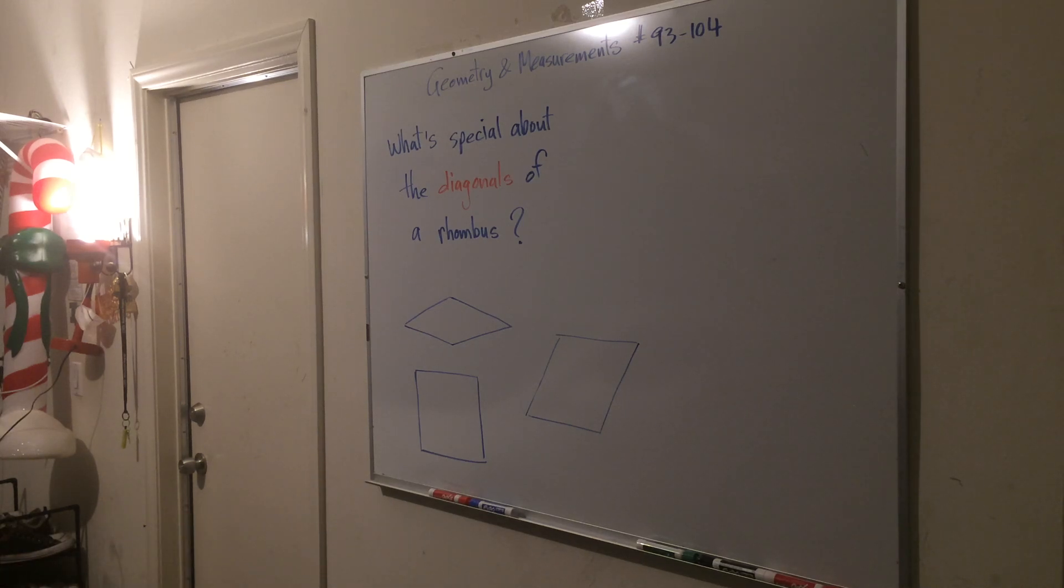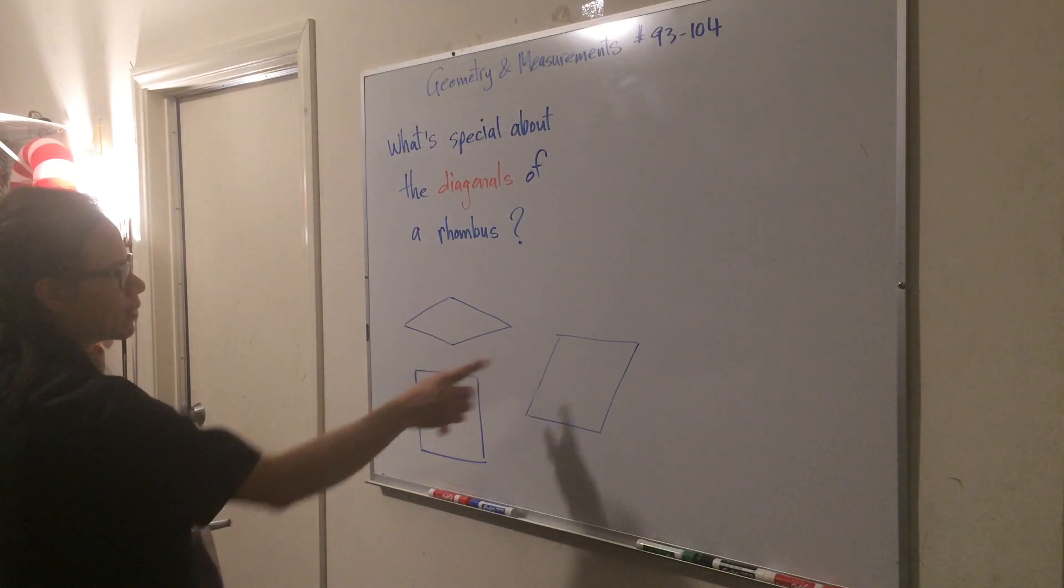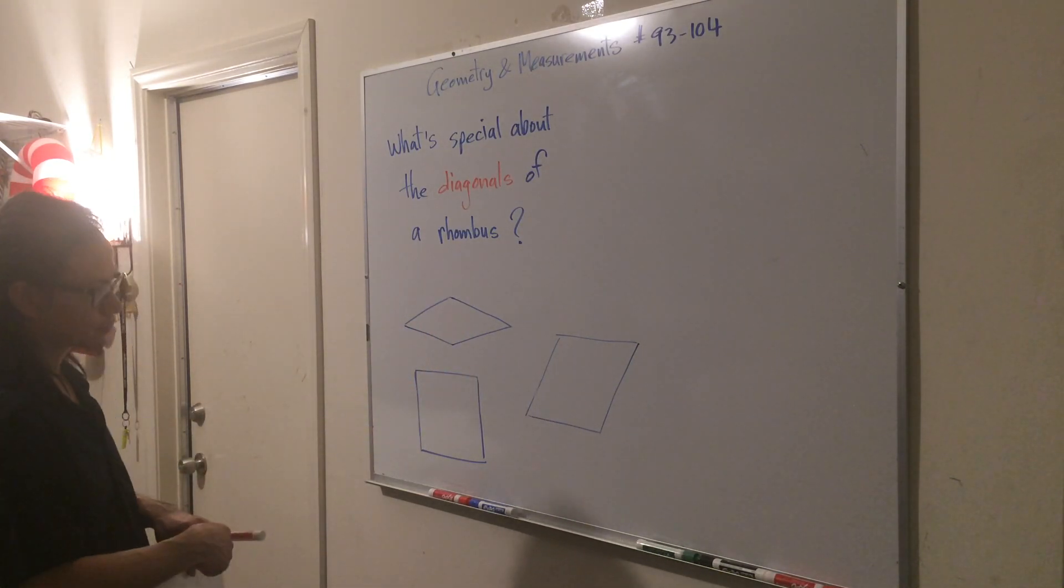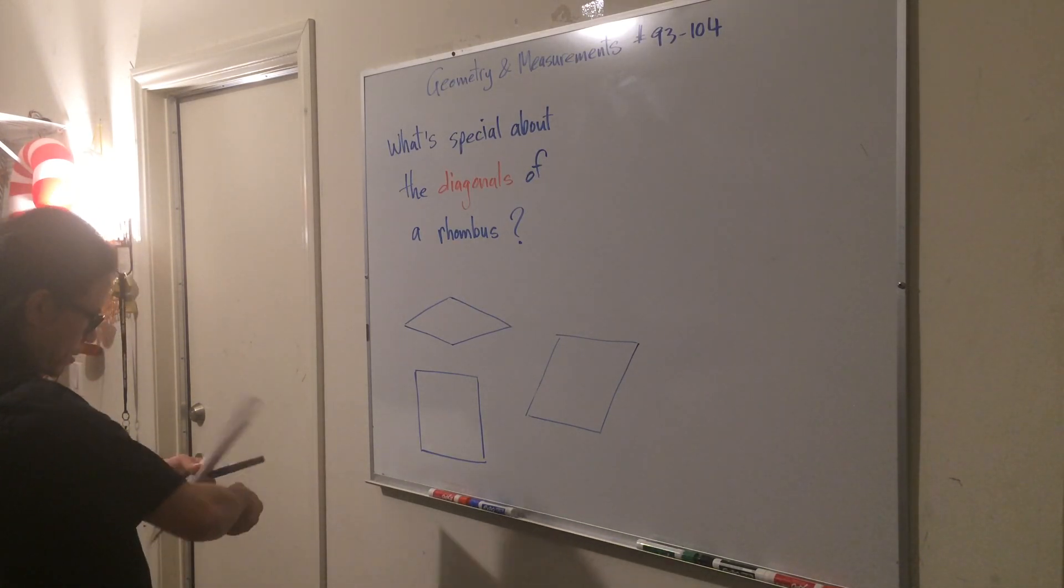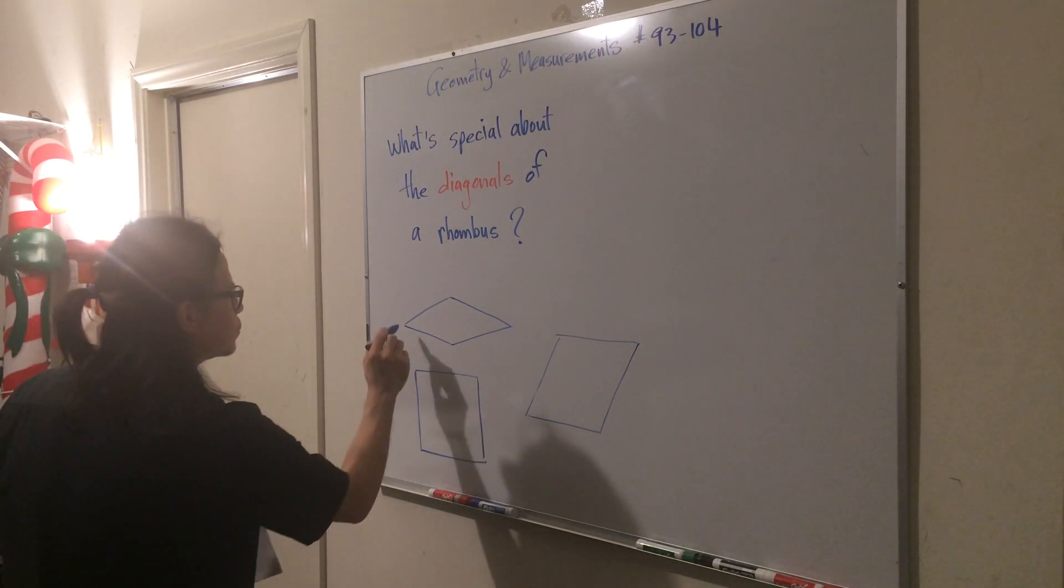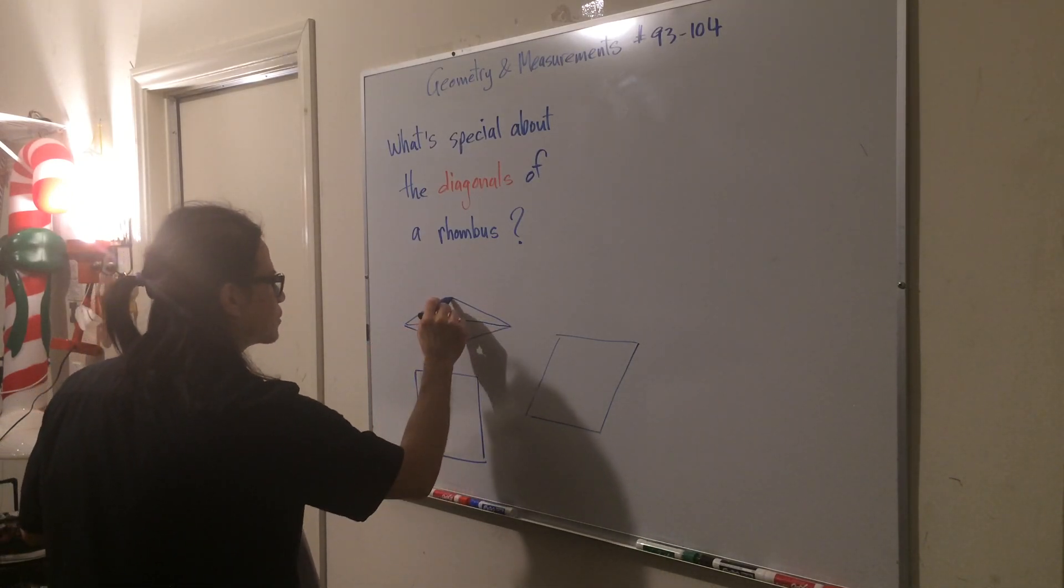So the question is: what's special about the diagonals of a rhombus? We have a variety of rhombuses here. By saying diagonals, we mean if you were to connect the opposite angles, like this.